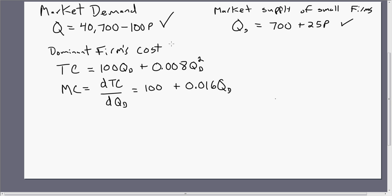And finally, the third bit of information that you need is the dominant firm's cost structure. So let's assume that the dominant firm has a total cost equal to 100 times QD plus 0.008 times QD squared, where the D subscript represents the dominant firm's output.